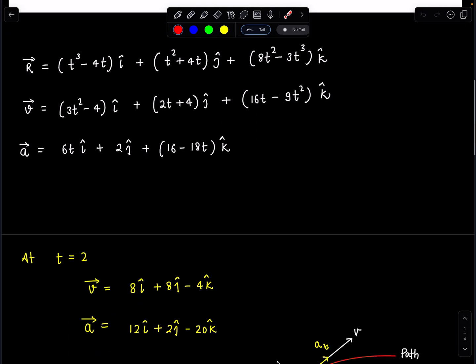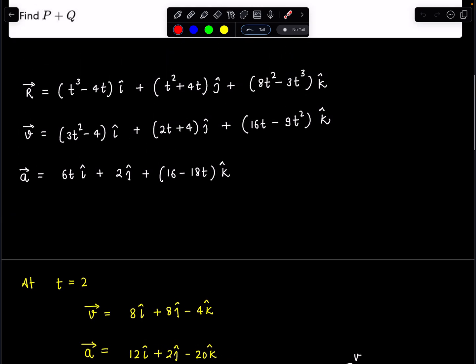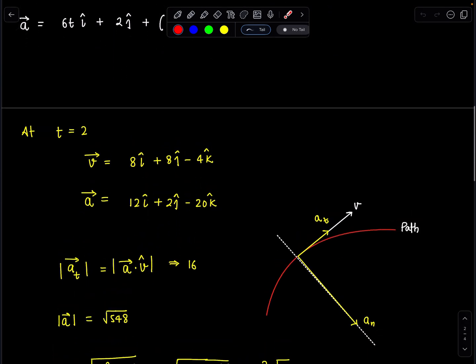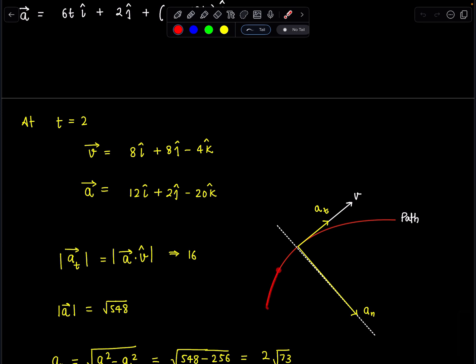Now at t equal to 2 we are going to calculate this vector v and vector a. I have covered this kind of problems in my class notes. So those students surely had some advantage in solving this and here you can see let's say this is the path or curve along which particle is moving and velocity vector will be along the curve and the acceleration will be somewhere in this direction. You can say component of acceleration along the path or you can say along the tangent is tangential acceleration and normal to that is a_n. This is what we have to calculate.